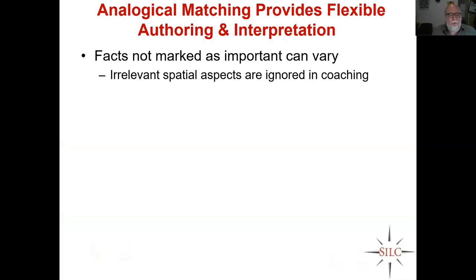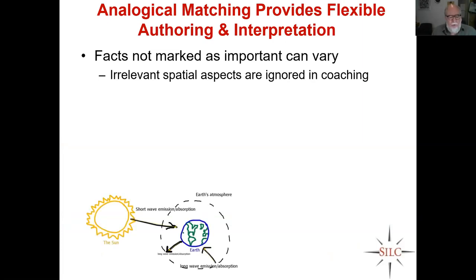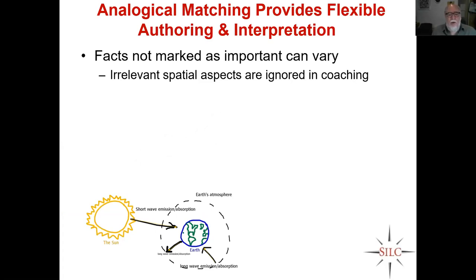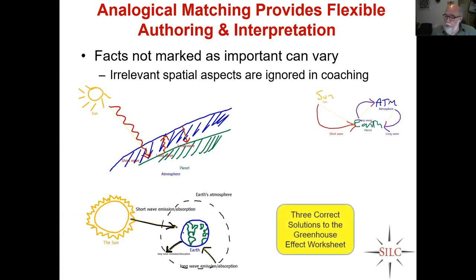Analogical matching is a very flexible way of doing authoring. If you don't mark a fact as important, it can vary — meaning you're ignoring irrelevant spatial aspects. To show just how flexible this is: here is a complete and correct solution to the greenhouse effect worksheet. This is also a solution — it was done by an NSF program manager who wasn't a geoscientist. We didn't require the planet to be a ball, we didn't require the atmosphere to be something around the planet. We could take a different perspective and it would be fine.